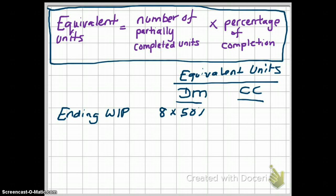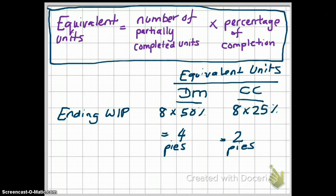Our ending inventory had 8 pies and they were 50% complete for direct materials, so our equivalent units for direct materials is 4 pies — those 8 pies that were 50% complete have the same direct material costs as 4 completed pies. For conversion costs, they were 25% complete, so the equivalent units for conversion costs is 2 pies: 8 partially completed units multiplied by 25% gives you 2 pies.